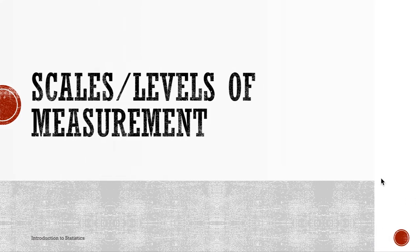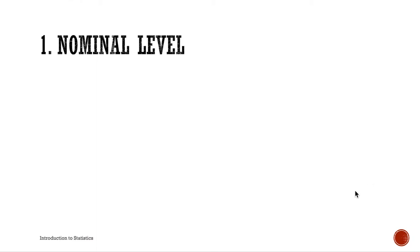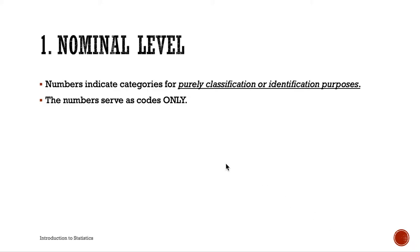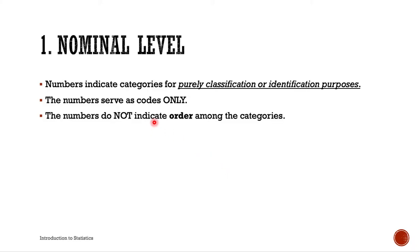Let's start with the nominal level of measurement. This level uses numbers to indicate categories for purely classification or identification purposes only. The numbers serve as codes only — any number can be used to represent a category as long as they do not duplicate. Numbers do not indicate order among categories.